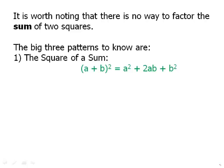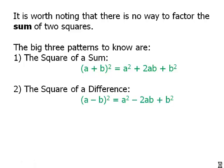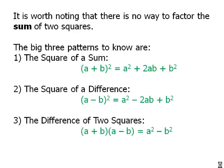The big three patterns to know are: the square of a sum — a plus b squared equals a squared plus 2ab plus b squared; the square of a difference — a minus b squared equals a squared minus 2ab plus b squared; and the most important one, the difference of two squares — a plus b times a minus b equals a squared minus b squared.